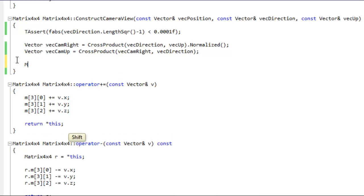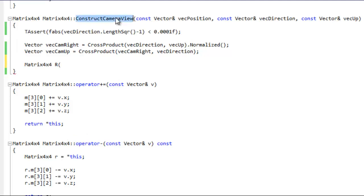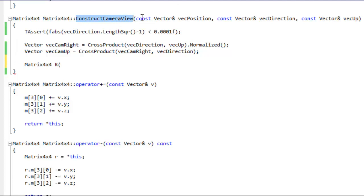So, that was a really complicated explanation, but this is actually going to be a really simple implementation. Usually, with these construct camera view sorts of methods, you're passed the position of the camera, the direction of the camera, and the up vector of the camera. So, the first thing I do is create a right and up vector for the local space of the camera, and we're going to use that to develop the R matrix.